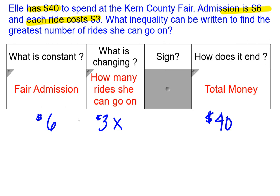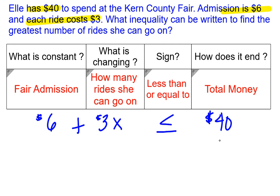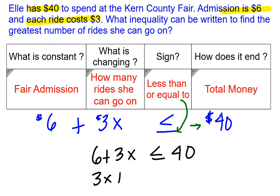We add these together because they are expenses. She can spend up to forty dollars but not go over it, so we use the less than or equal to sign. Cleaning this up: six plus three x is less than or equal to forty. You can also write it as three x plus six is less than or equal to forty — the commutative property allows us to switch those around.